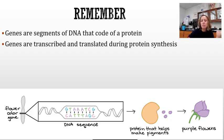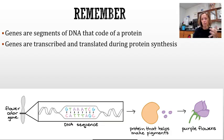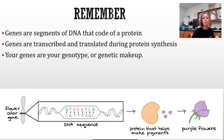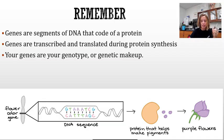Genes are then transcribed and translated during protein synthesis — transcribed means rewritten, translated means changed into the protein. Your gene is going to give you your actual genotype — like letters like big A, little a, heterozygous, homozygous — your genetic makeup.